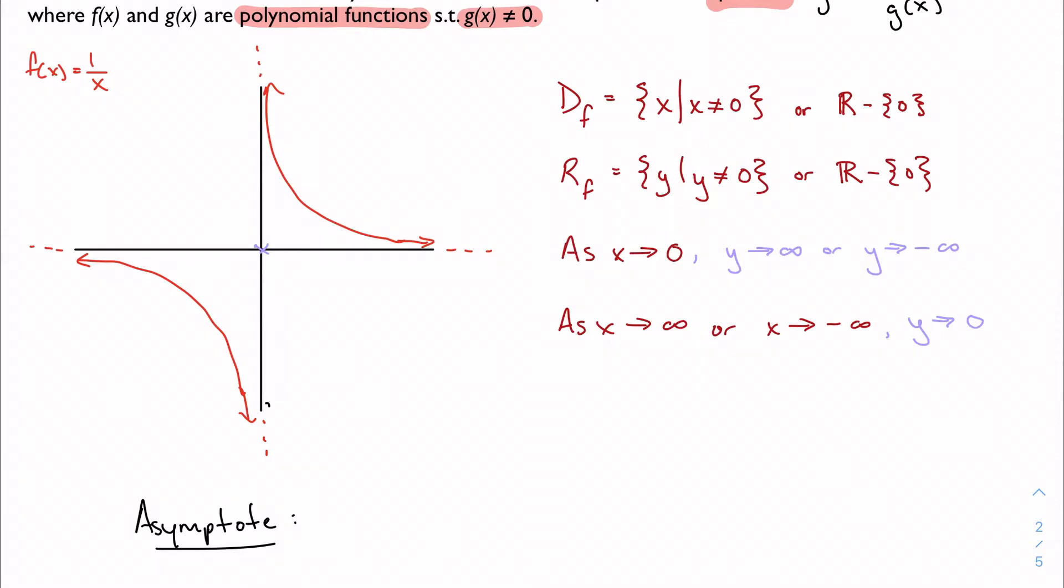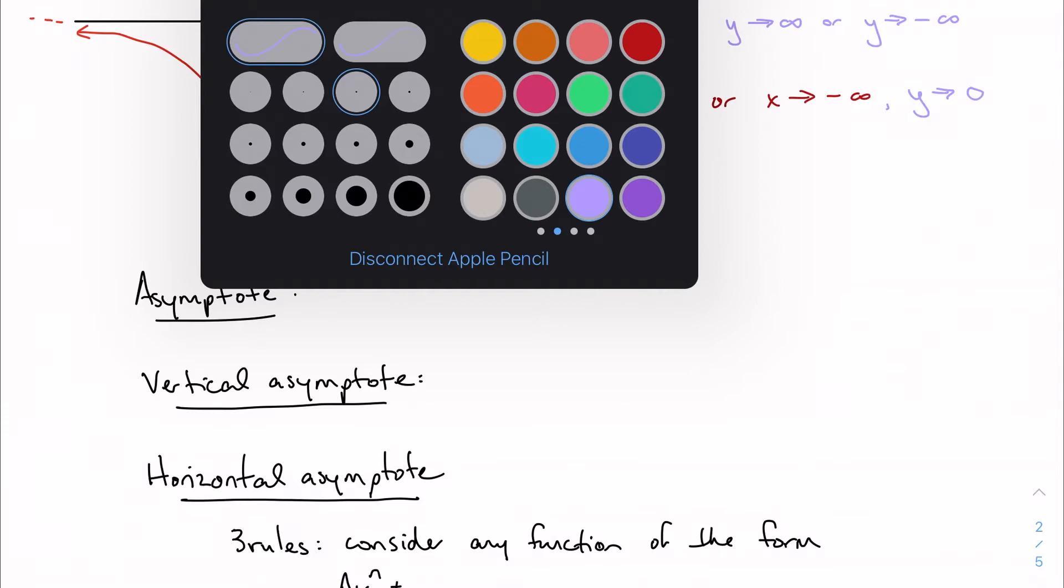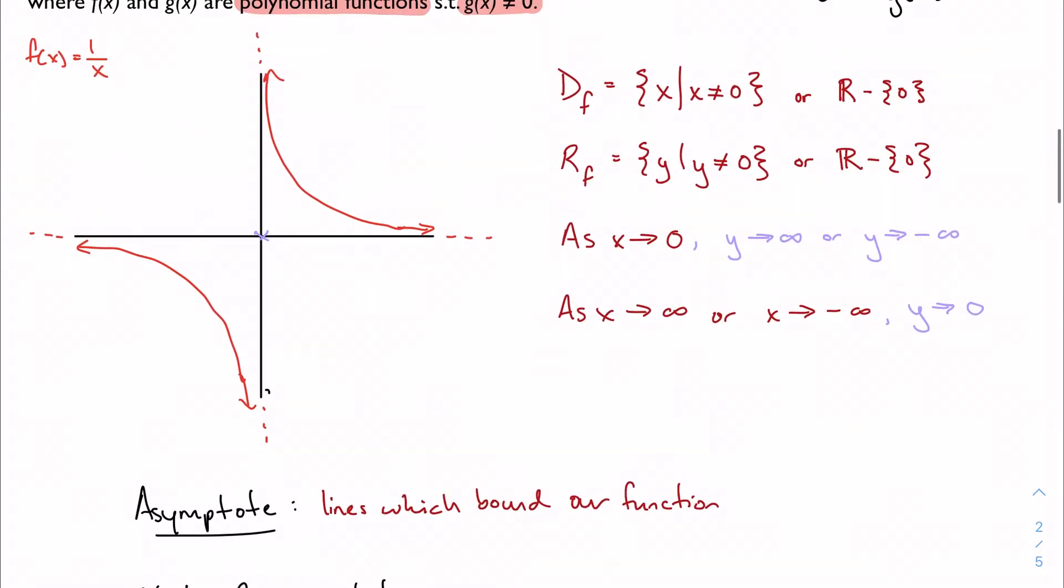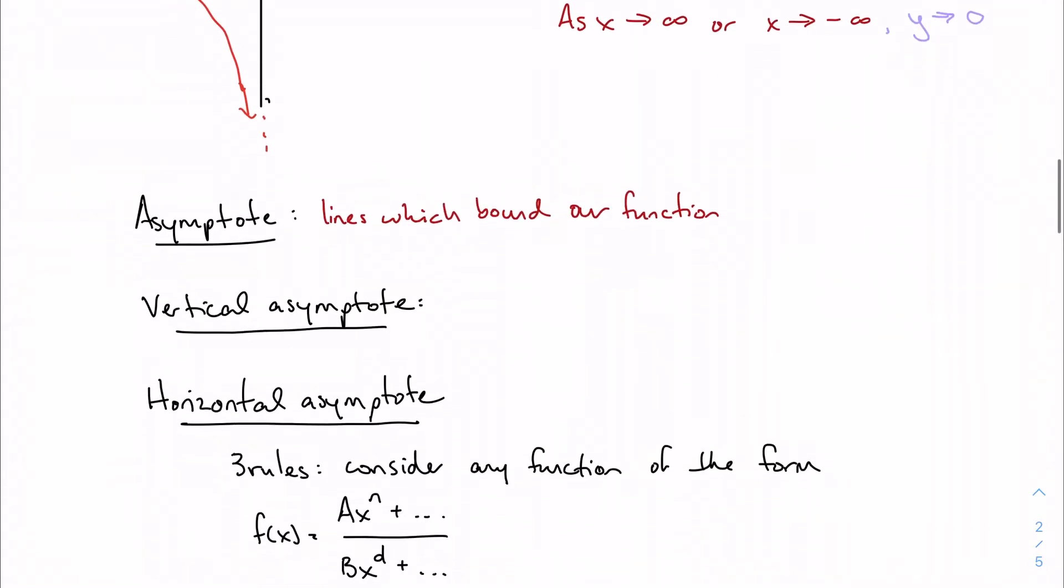This is what forms my asymptotes. Asymptotes are lines which bound our equation or our function. I can't have anything going on on the x or y axis in this case because that is where my asymptotes are. They're kind of like fences.